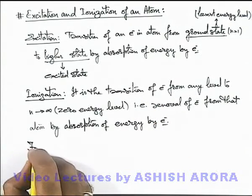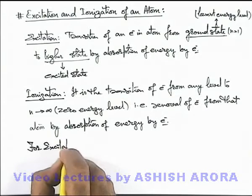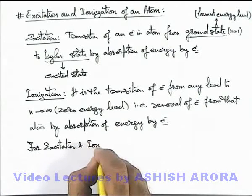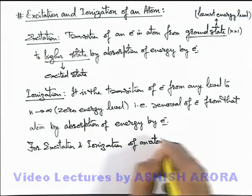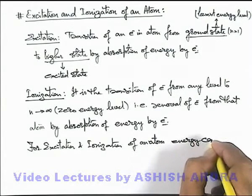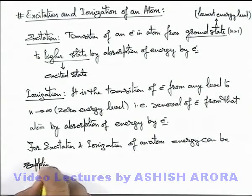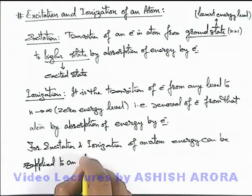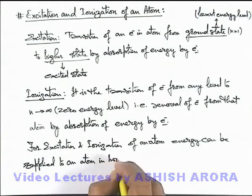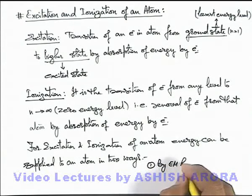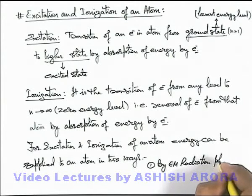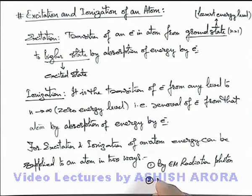Here we can also state that for excitation and ionization of an atom, energy can be supplied to an atom in 2 ways. These are the 2 ways we are going to discuss one by one in detail. The very first method is by electromagnetic radiation — by supplying electromagnetic radiation or light photons onto an atom, the energy can be supplied.